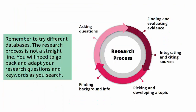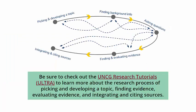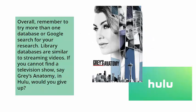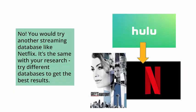Remember to try different databases. The research process is not a straight line — you will need to go back and adapt your research questions and keywords as you search. Be sure to check out the UNCG Research Tutorials Ultra to learn more about the research process of picking and developing a topic, finding evidence, evaluating evidence, and integrating and citing sources. Overall, remember to try more than one database or Google search for your research. Library databases and searching for scholarly articles are similar to streaming video searching. If you cannot find a television show, say Grey's Anatomy, in Hulu, would you give up? No — you would try another streaming database like Netflix. It's the same with your research: try different databases to get the best results.